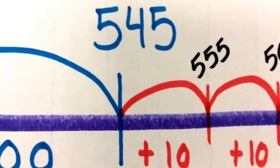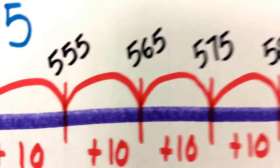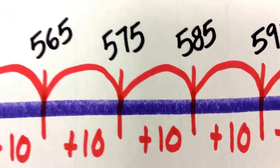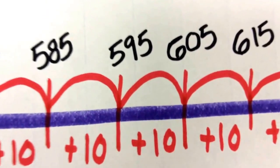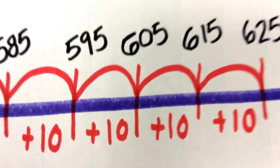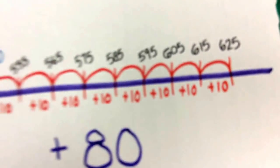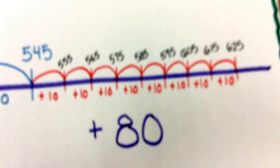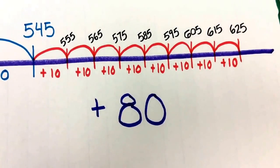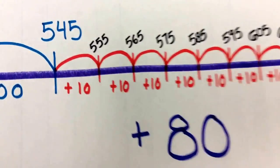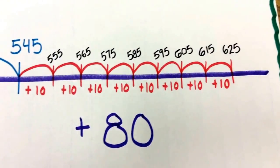Adding 10 to 545 brings us to 555, 565, 575, 585, 595, 605, 615, and finally 625. What I just did was add 8 groups of 10 to 545, leaving us at 625.